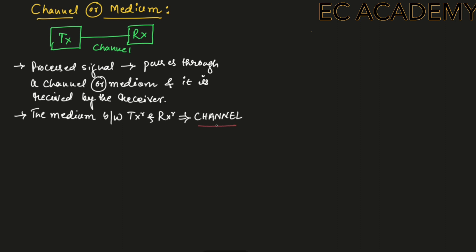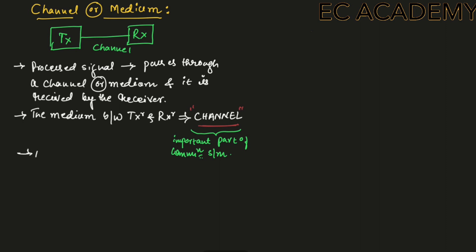The medium between transmitter and a receiver is known as a channel. Channel is a very important part of a communication system. Most of the noise is added into the signal during transmission through the channel.